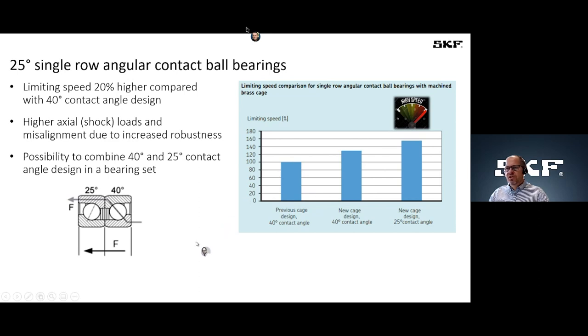And in addition, due to the new ring design, the bearings are more robust against misalignment and also more robust against the axial shock loads. And the big advantage, Paul already shown before, is that it's possible now to arrange a 25 and a 40 degree angular contact ball bearing next to each other if the bearings are universally matchable.